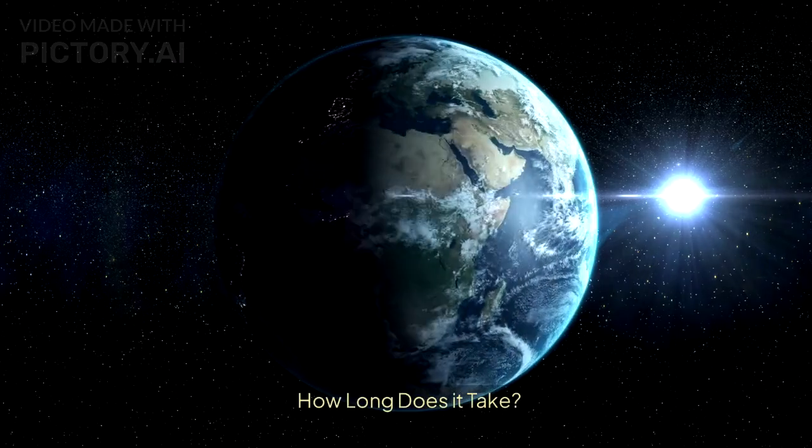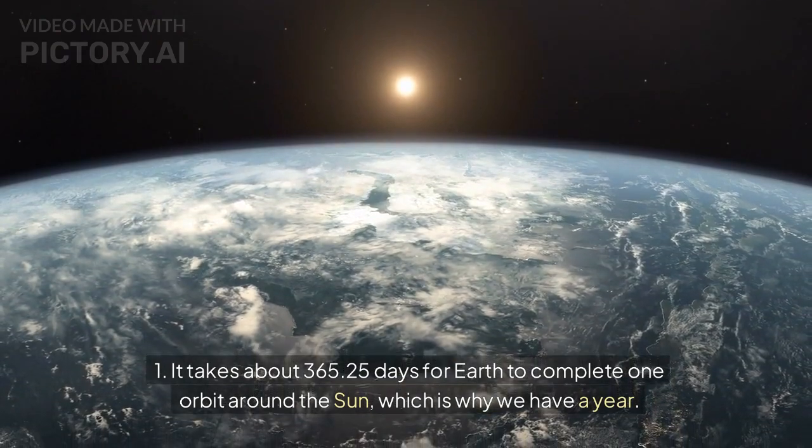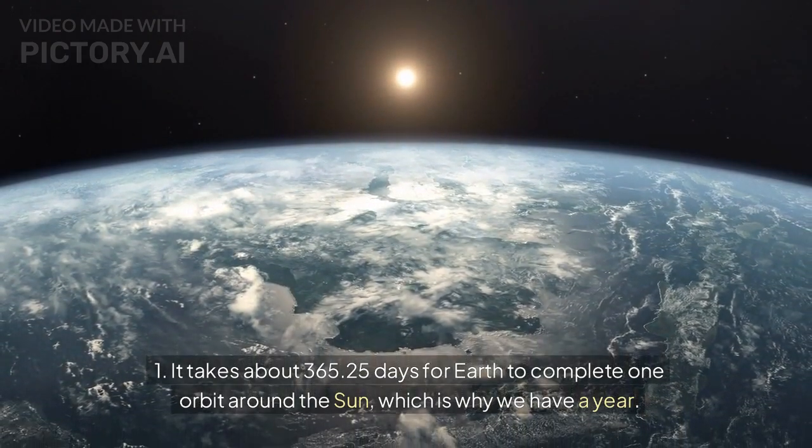How long does it take? It takes about 365.25 days for Earth to complete one orbit around the sun, which is why we have a year.